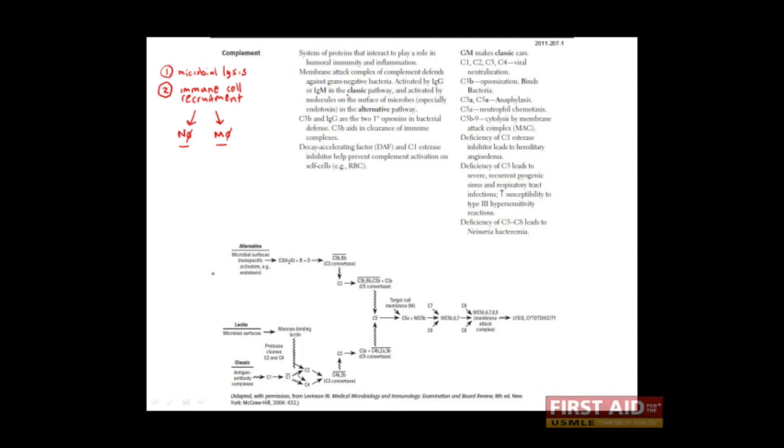The first thing to say is that the complement cascade can be activated in one of three ways: the so-called alternative pathway, the lectin pathway, and the classical pathway. I'll explain these in a moment. But the important thing is that despite the method of activation, the complement cascade can result in the formation of something called the membrane attack complex, or MAC.